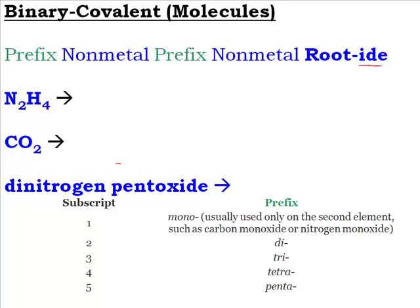To name a molecule with a formula of N2H4, the N stands for nitrogen, so that's our first part of the name. Then we look at the prefixes. If the subscript is a 2, the prefix that goes with that is 'di.' So that means it would be dinitrogen.